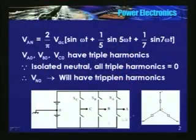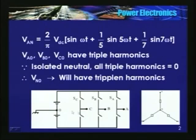The pole voltages Va0, Vb0, and Vc0 do have triplen harmonics. In a star-connected system, the triplen harmonics appear in the neutral, specifically in VnO — the voltage between the neutral and the center point of the DC link. Both line current waveform and line-to-phase voltage waveform have only 6n ± 1 harmonics.